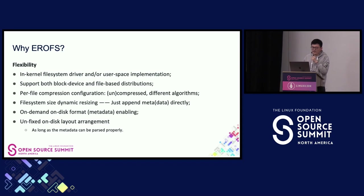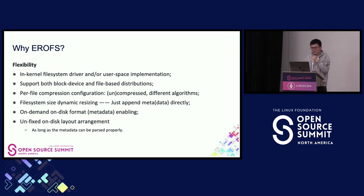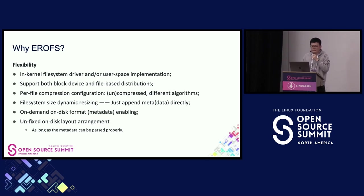Another reason is flexibility. We both have an in-kernel file system driver and user-space implementation. It supports both block device and file-based distribution. We have per-file compression configuration — files can be compressed or uncompressed and we can use different algorithms for each file. The file system size can do dynamic resizing — you can just append metadata or data directly, making it much easier to update the image. For most features, we can also enable on-disk format features on demand, and since the on-disk format is quite simple, you can arrange your on-disk layout as needed, as long as the metadata can be parsed properly.